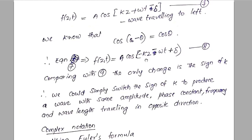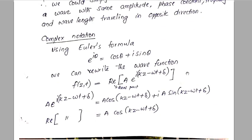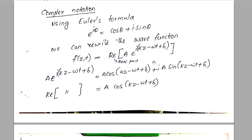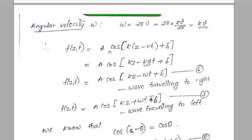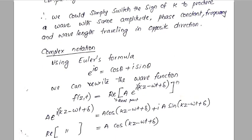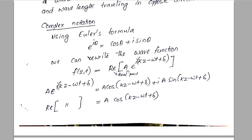Now we will use complex notation for the wave function. This is very simple: we use e raised to i·theta equals cos(theta) plus i·sin(theta). So the wave function f of z, t equals A cos(kz minus omega·t plus delta) can be written using the exponential function as A into e raised to i(kz minus omega·t plus delta).